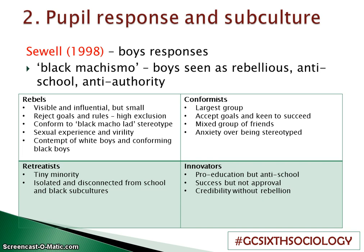Then we have the conformists, generally the largest group, who accept the goals and are keen to succeed. They don't necessarily socialise only with people of the same ethnic group and have high anxiety about being stereotyped alongside the rebels from their ethnic group. Then the retreatists, a very small minority who totally isolate and disconnect themselves from school. And the innovators, who are pro-education but anti-school — similar to Fuller's black girls. They look for success but not approval; they want credibility with the rebels without actually being rebellious, so they might act as though they don't care but they do.